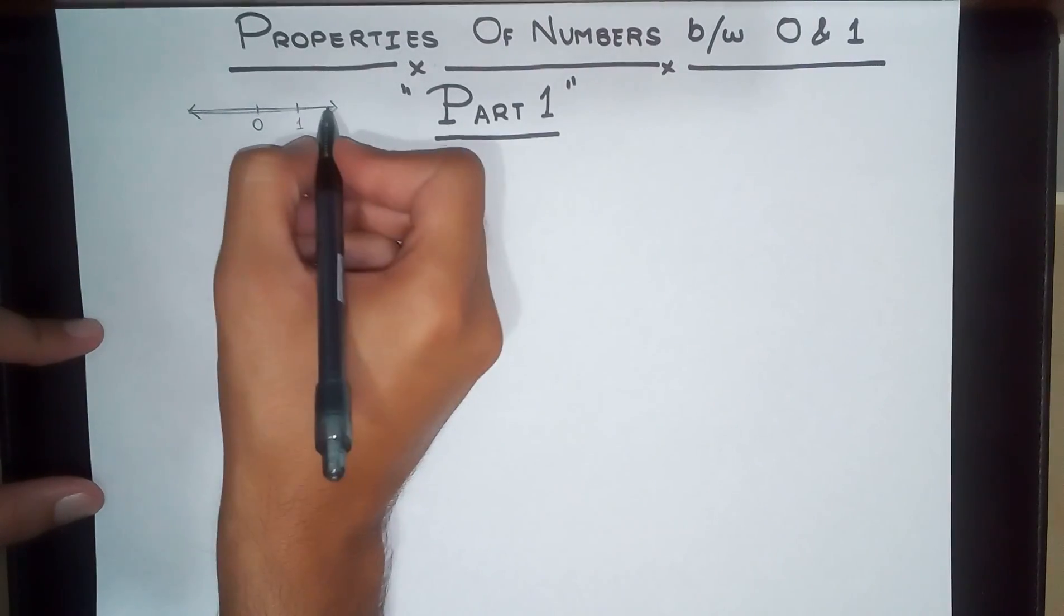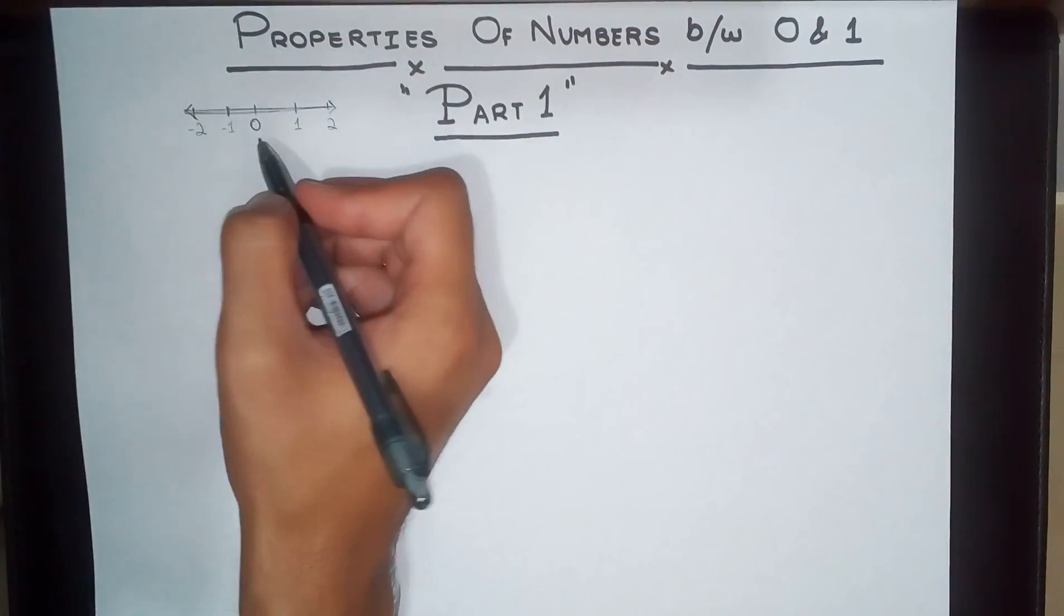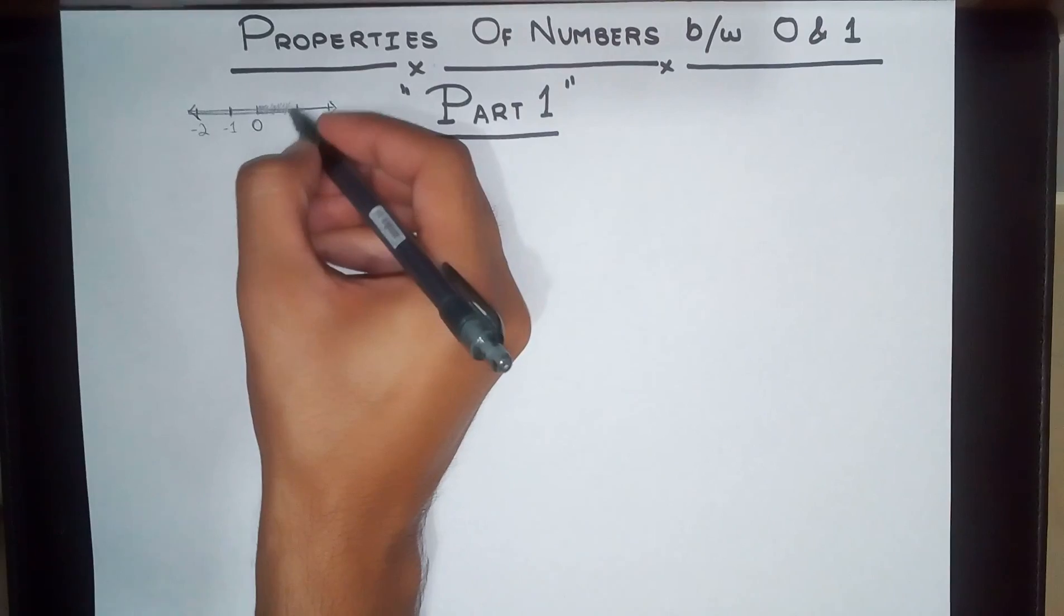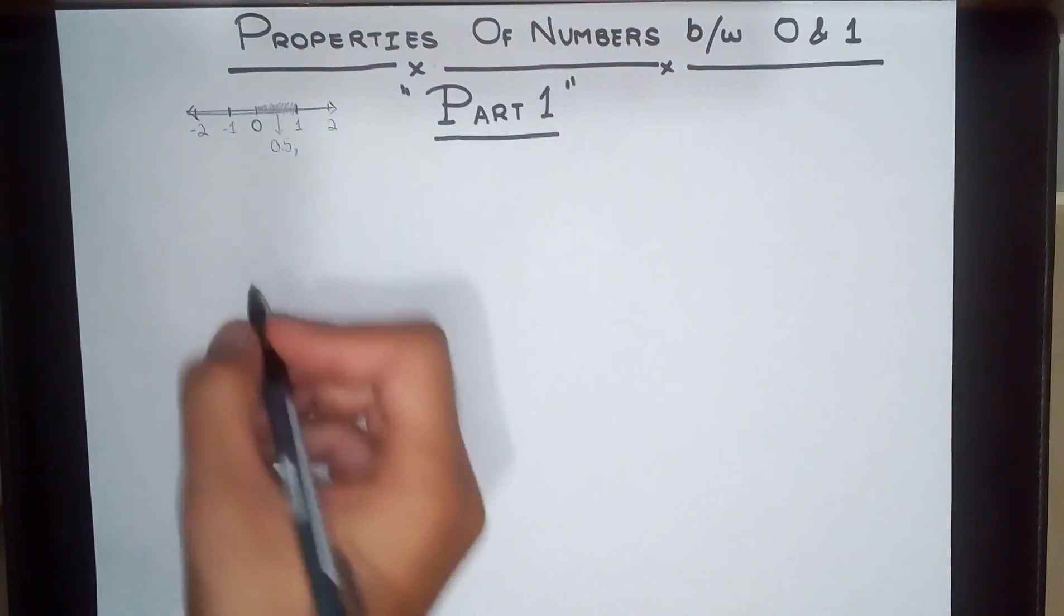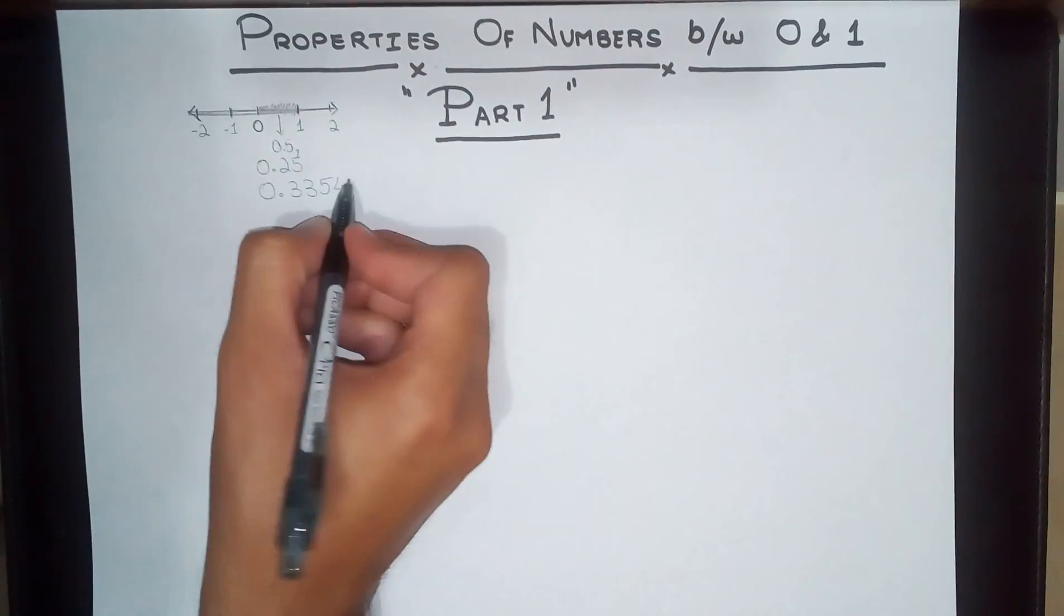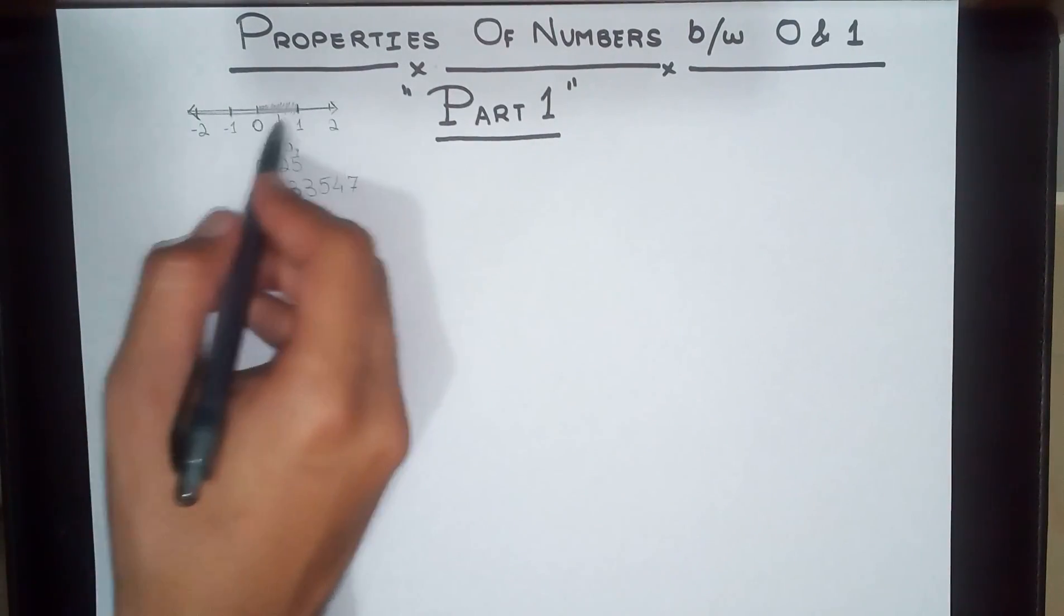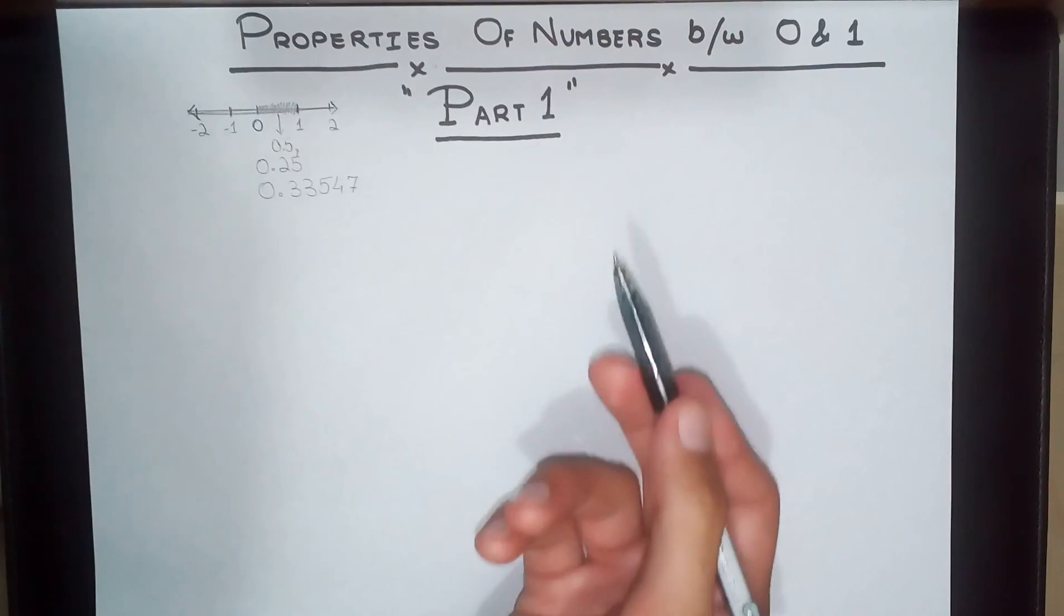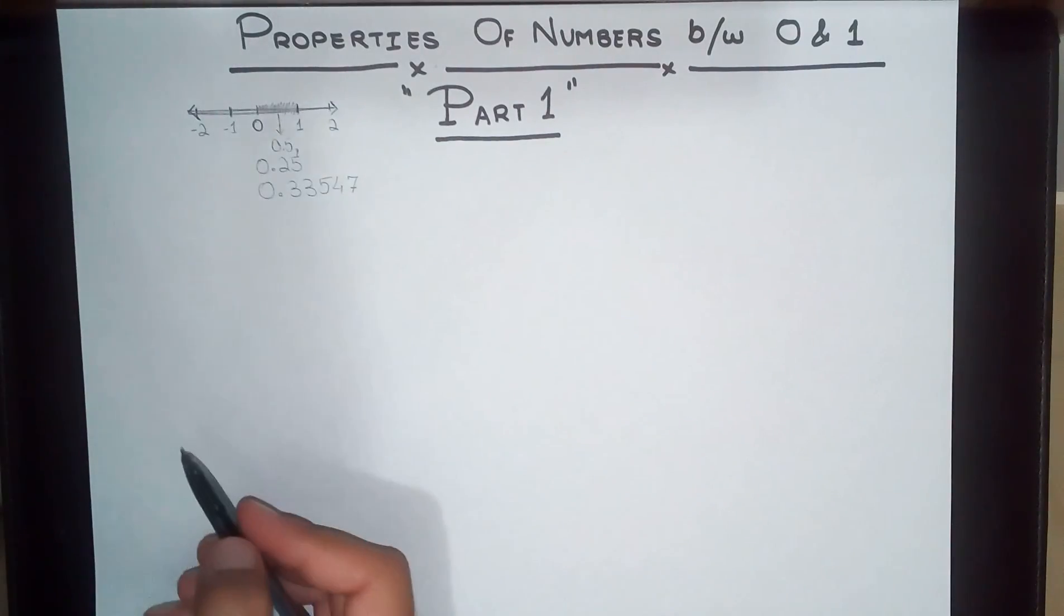...and we have 1, and further off we have 2. Below 0 we have negative 1 and further off we have negative 2. Now what we are going to be discussing are the properties of the numbers lying between 0 and 1, basically this part. This can be 0.5, 0.25, or 0.33547, or anything like that. Any number along this region is what we're going to be discussing, and what are the properties that they exhibit and the rules that we can apply on each and every one of these numbers which lie between 0 and 1.